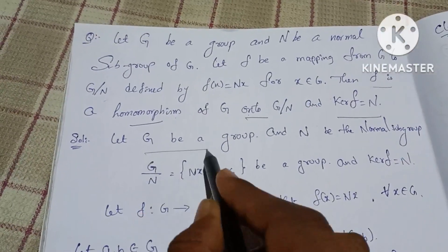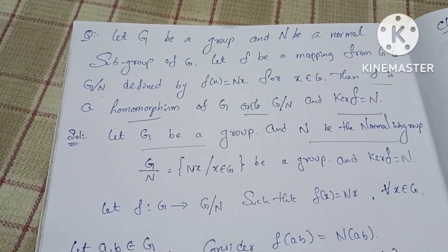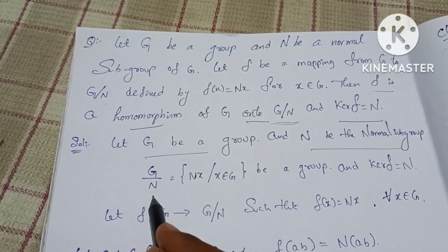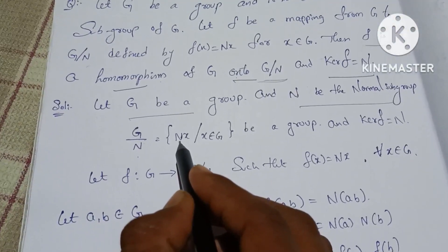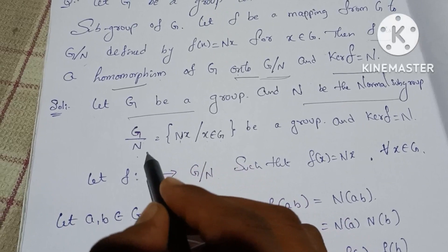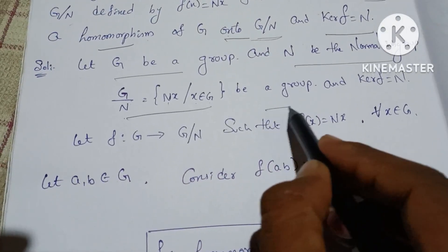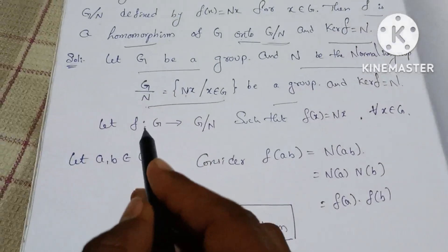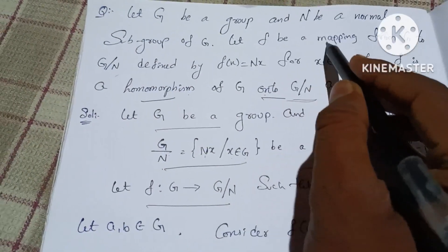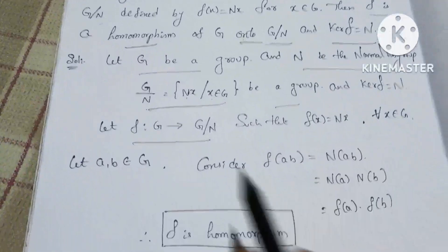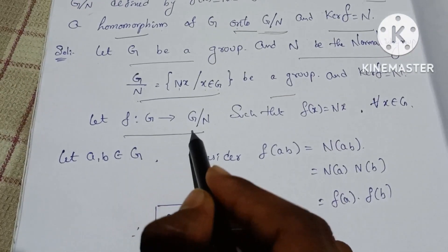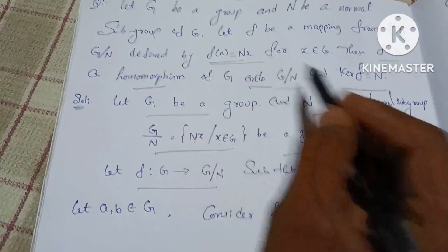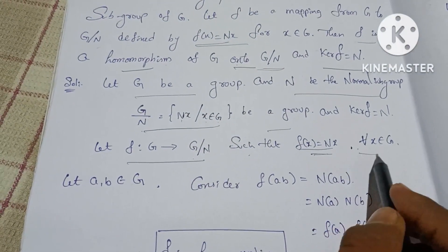Let G be a group and N be a normal subgroup. G/N is a quotient group, and G/N equals the set of cosets Nx where x belongs to G. Let F be the mapping from G to G/N such that F(x) = Nx for all x belongs to G.